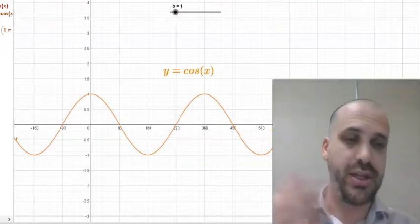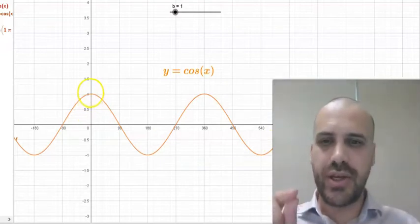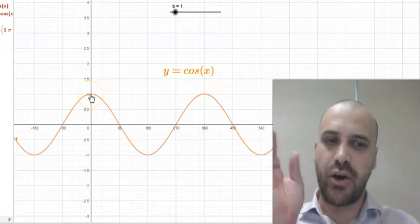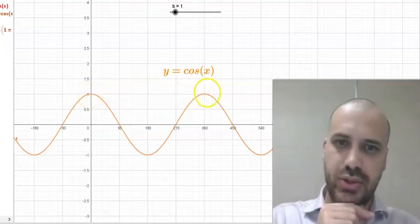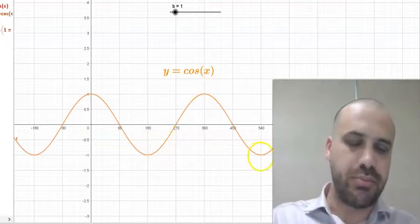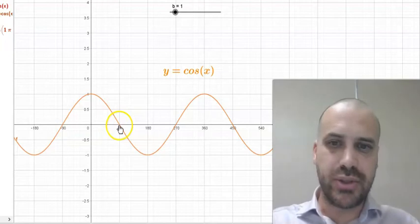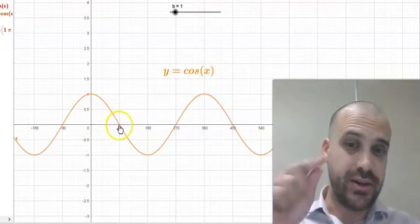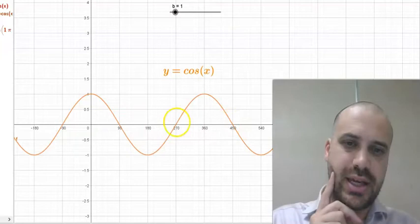and then you're back at the top again and you start again. The period of this function is the horizontal distance from there to there or from there to there, the bottom to the bottom, or from the middle to, and this is the middle heading down, from the middle to the middle heading down.